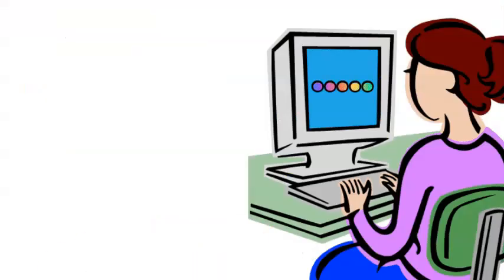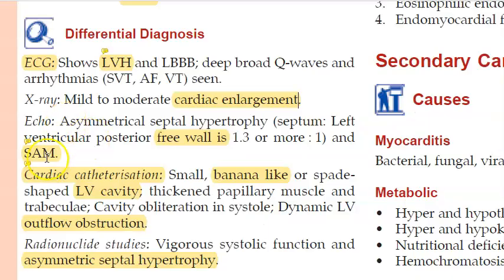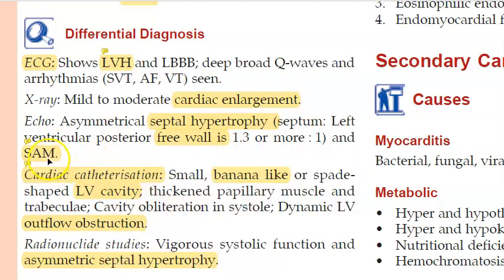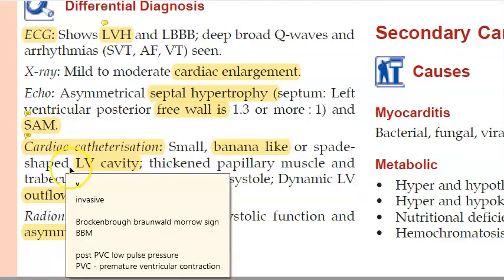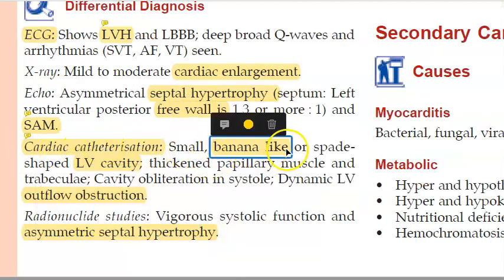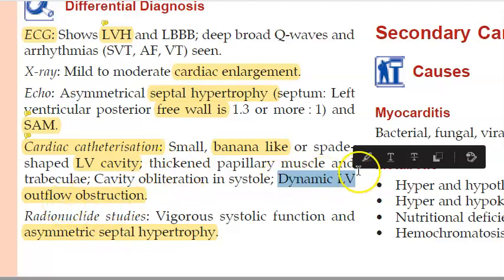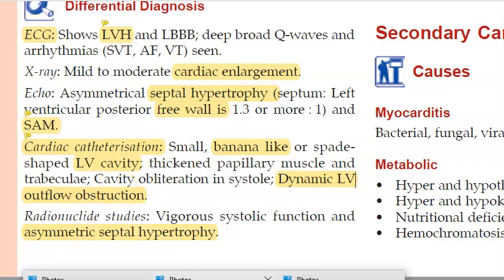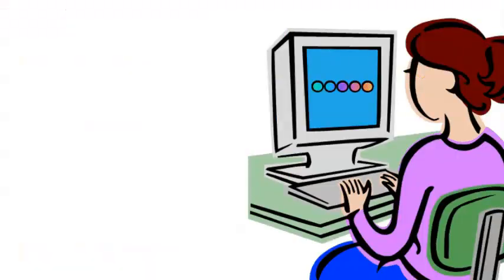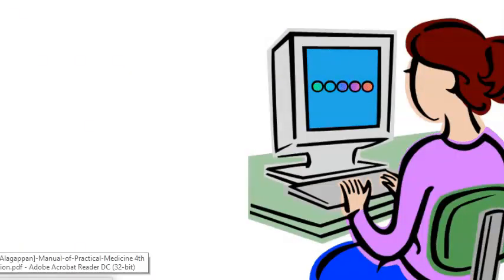On echocardiogram you will see a thick free wall, septal hypertrophy, and systolic anterior displacement of the mitral valve. On cardiac catheterization you will see a banana-like LV cavity and dynamic LV outflow tract obstruction, though catheterization is an invasive procedure.